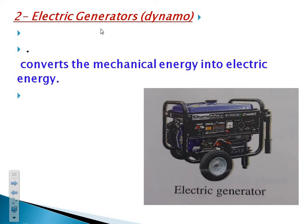The second device is the electric generator, also known as the dynamo, as shown in this picture. This electric generator converts — or changes — from mechanical energy, which is kinetic energy, into electric energy — mechanical into electric. It is used to generate electricity, as its name says: electric generator.